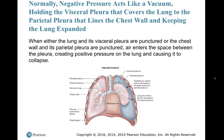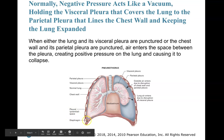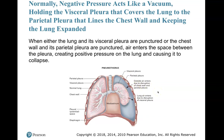Normal negative pressure acts like a vacuum, holding the visceral pleura that covers the lung to the parietal pleura that lines the chest wall, keeping the lung expanded. When either the lung and its visceral pleura are punctured, or the chest wall and its parietal pleura are punctured, air enters the space between the pleura, creating positive pressure on the lungs and causing them to collapse. Outside air enters through a penetration, penetrates that parietal pleura, adds pressure on that lung, and it collapses.